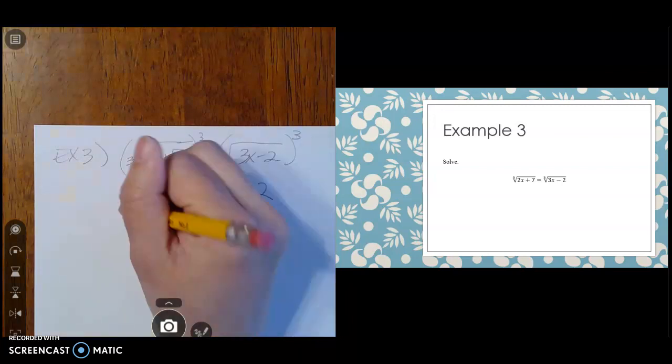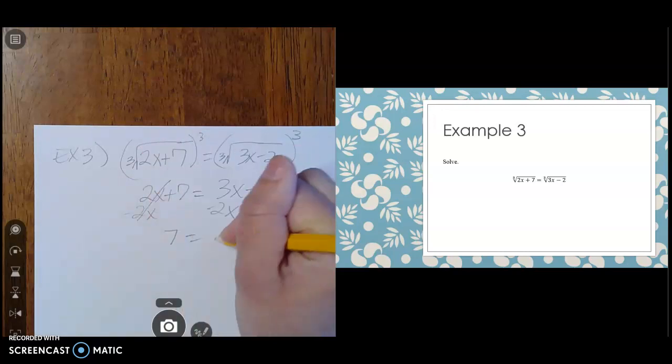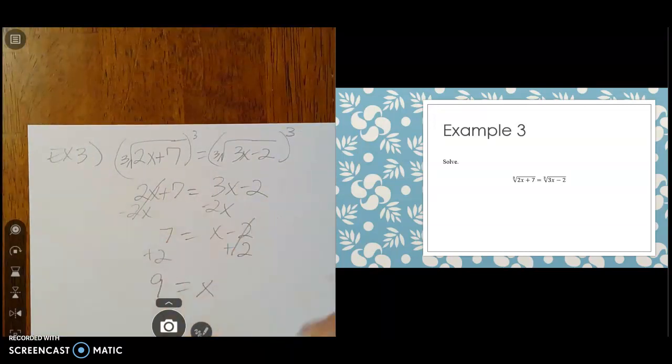From here, I'm going to get the x's together. I'll subtract 2x from both sides to get 7 equals x minus 2, then add 2 to both sides to get x by itself, and I get 9 equals x.